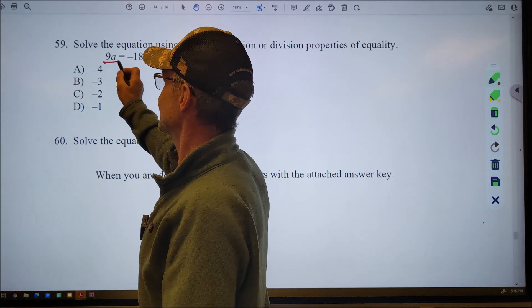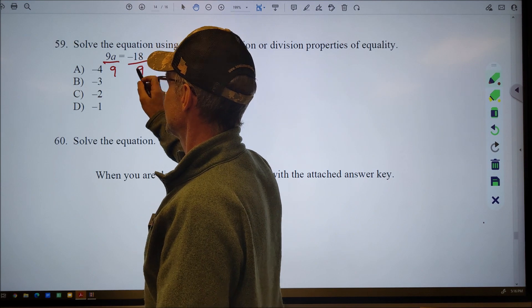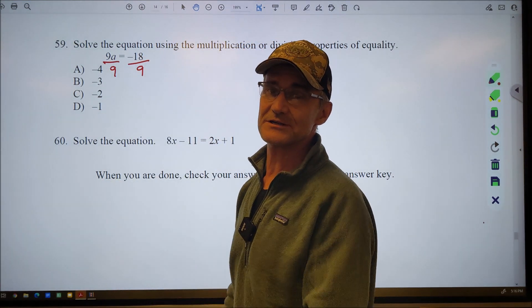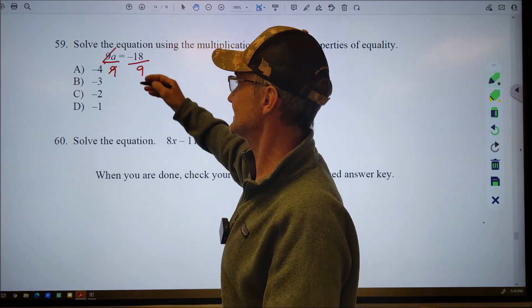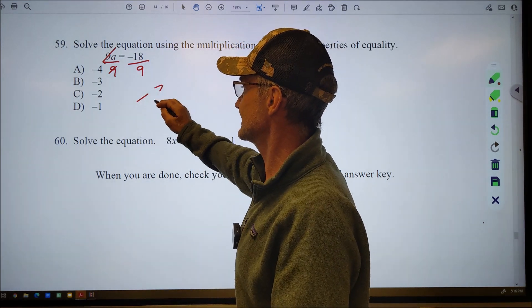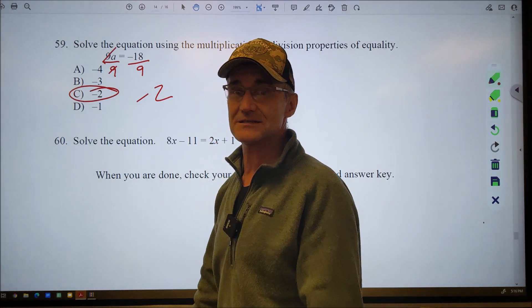All right. Get A by itself. 59 and divide both sides by 9. This is multiplication. Reverse operation is division. The 9s cancel. Negative 18 divided by 9 is negative 2. That's my answer right there. Answer C.